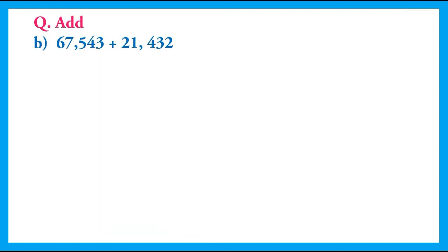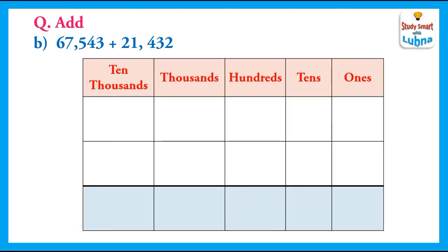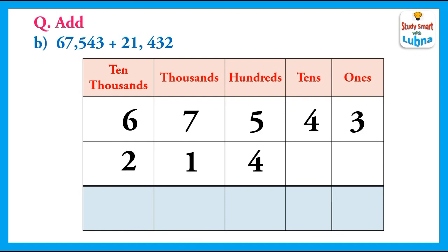Another example: here we have to add 67,543 and 21,432. We will write these five-digit numbers below their place values: 67,543 and 21,432. Now we have to find their sum. First of all we will add the ones: 3 plus 2 equals 5. Now we add the digit in the tens column: 4 plus 3 equals 7.